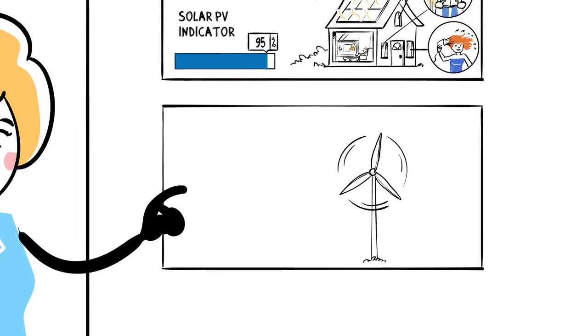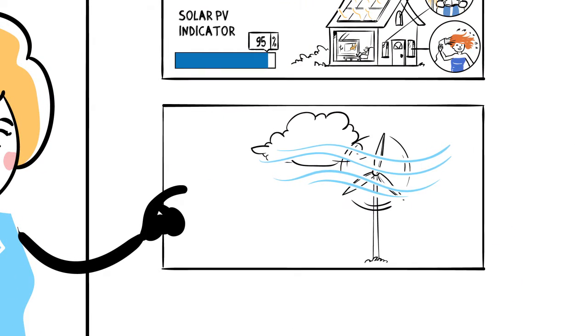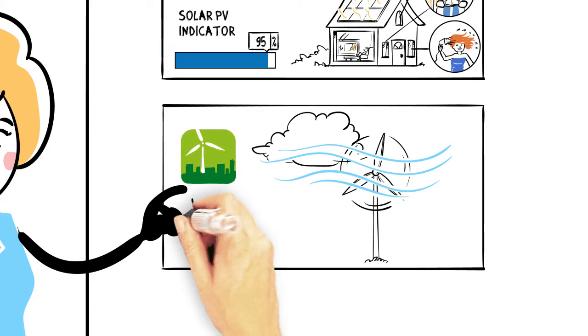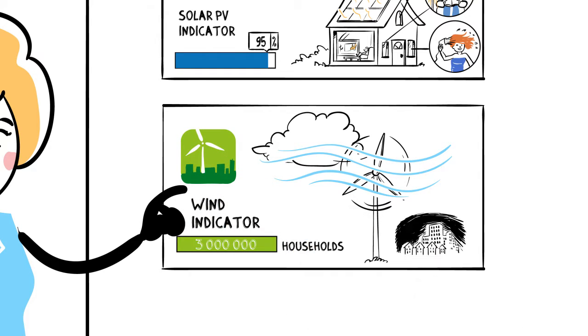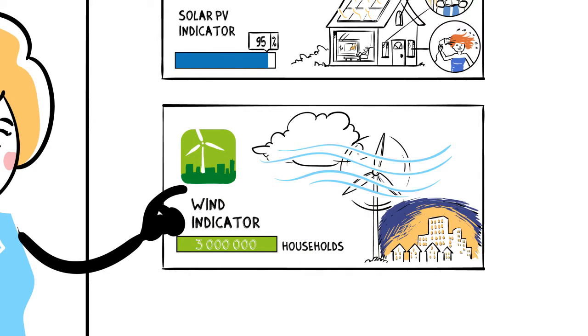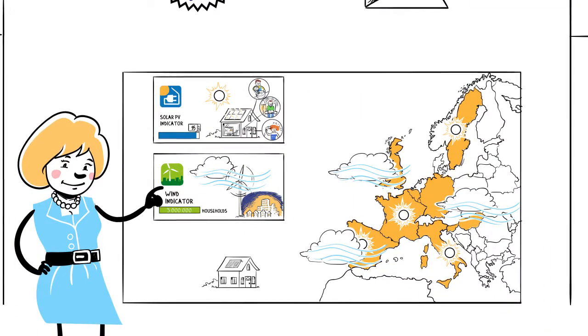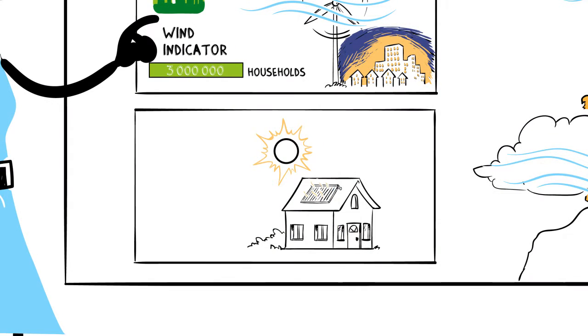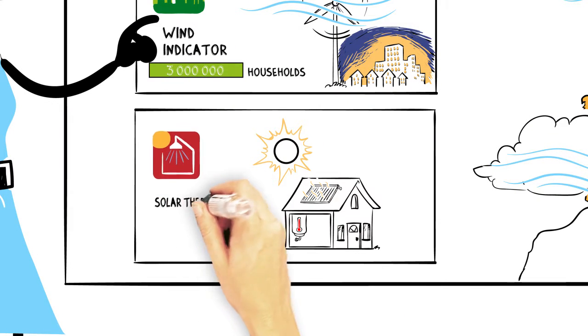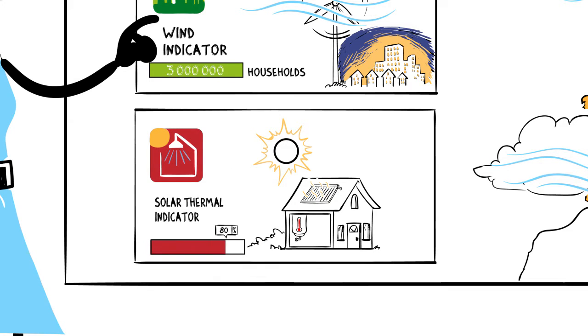Wind turbines produce electricity thanks to energy from the wind. The wind indicator shows the number of households that could have been supplied with electricity thanks to the power of Europe's wind. Solar thermal systems use solar collectors to heat water stored in a tank. The solar thermal indicator shows in percentage terms how much hot water could have been provided to the average-sized family.